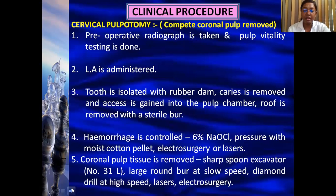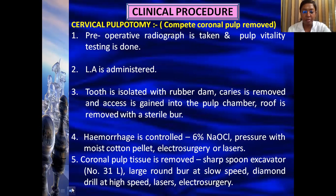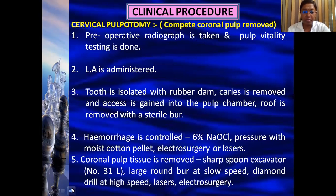The clinical procedure for cervical pulpotomy begins with a preoperative radiograph and pulp vitality testing, followed by administration of local anesthesia and isolation of the tooth with rubber dam. Caries is completely removed with a round bur and access is gained into the pulp chamber. The roof of the pulp chamber is completely removed with a round bur. Hemorrhage is controlled using lasers, electrosurgery, pressure with a moist cotton pellet soaked in local anesthetic solution, or 6% sodium hypochlorite. The coronal pulp tissue is then completely removed using a sharp spoon excavator (No. 31L), a large round bur at slow speed, a diamond drill at high speed, or lasers and electrosurgery.